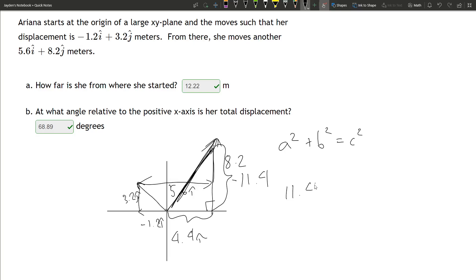a squared plus b squared equals c squared. The hypotenuse is 12.22 meters.